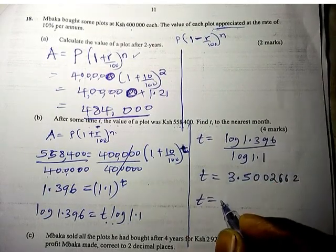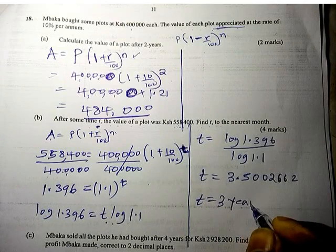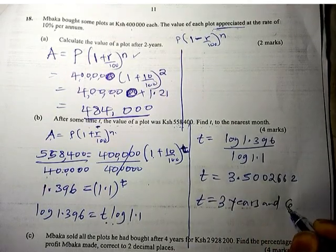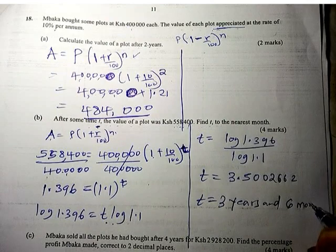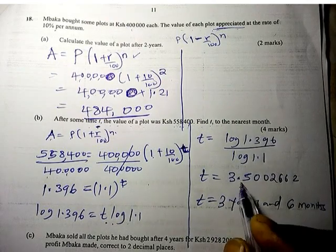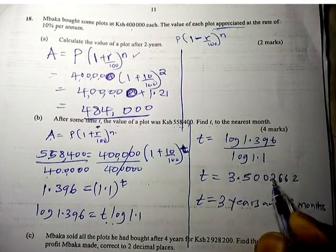So T equals 3 years and 6 months. By my work, 6 months was about 5 months and something, some days.